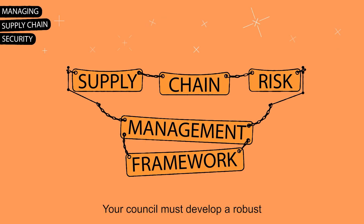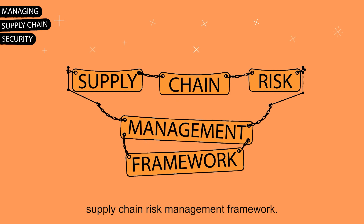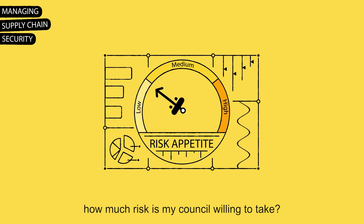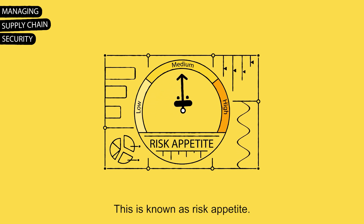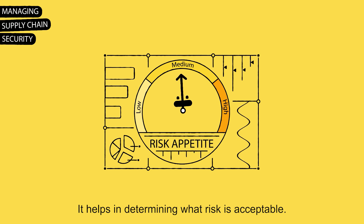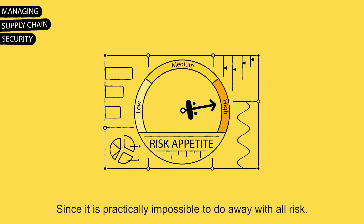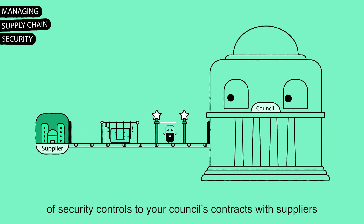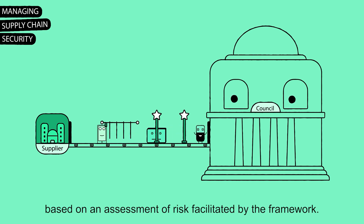Your council must develop a robust supply chain risk management framework. This framework requires you to ask: how much risk is my council willing to take? This is known as risk appetite. It helps in determining what risk is acceptable, since it is practically impossible to do away with all risk. You can then assign adequate levels of security controls to your council's contracts with suppliers, based on an assessment of risk facilitated by the framework.